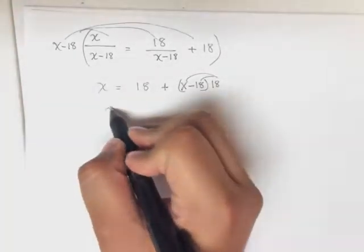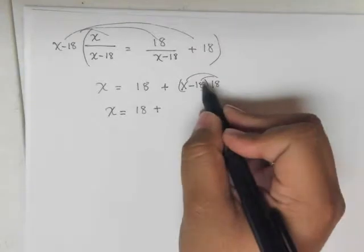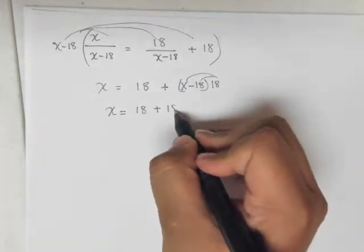And then we can distribute that. We've got x equals 18 plus, and then x times 18 is 18x.